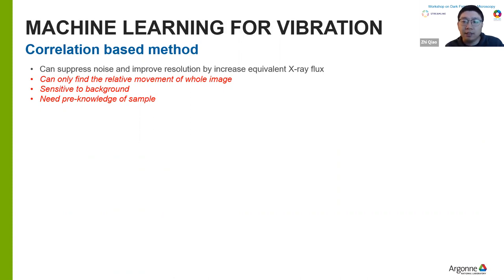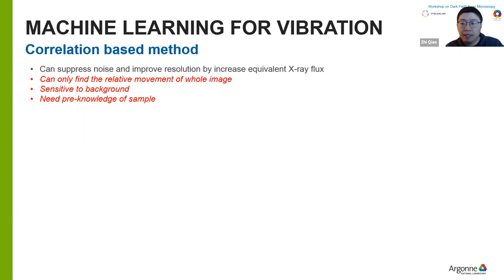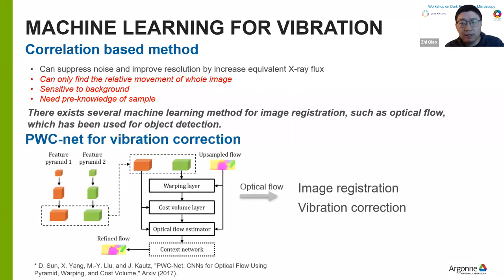The cross-correlation-based method can effectively mitigate image blurring due to mechanical instability. However, there are some shortcomings. First, the cross-correlation method can only get the relative displacements of the whole sample, so local instability is ignored. Also, the cross-correlation method is sensitive to the image background — if the illumination beam fluctuates too much, the method will fail to find the right displacements. Another disadvantage is that it requires pre-knowledge of the sample, which is very difficult for dark field imaging. There are several machine learning-based methods for image registration that may also be applicable to the dark field microscope.